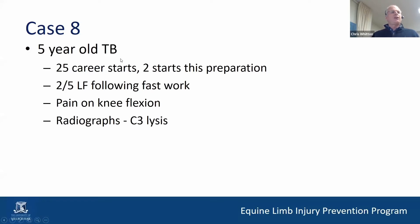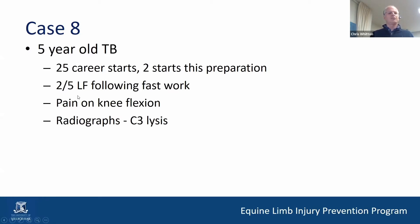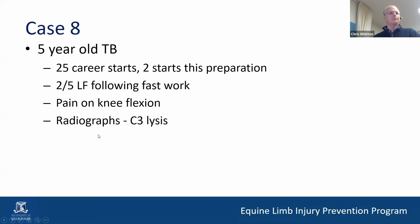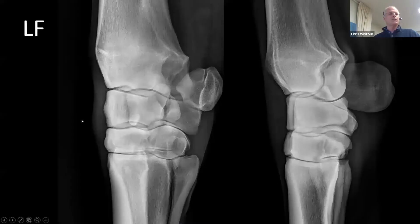The next case is a five-year-old thoroughbred that has had quite a few starts and it's the second start of this preparation. It's got a two out of five left forelimb lameness following fast work, some pain on knee flexions, and radiographs showed some C3 lysis, which I'll show you in a moment.